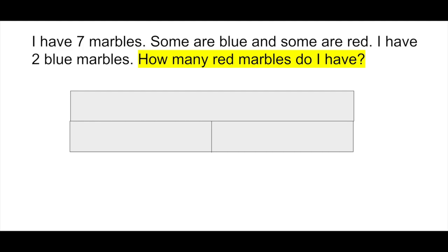I'm going to do one of these charts to help organize our thinking. At the top, we have the box that stands for the whole amount of marbles I have. And then the bottom two are going to be for the blue and the red marbles. So, altogether, there were seven marbles, and some of those marbles were blue, and some were red.